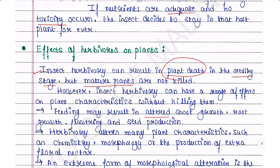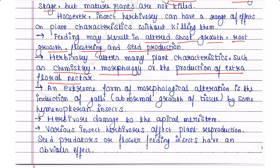Herbivory alters many plant characteristics such as chemistry, morphology, or production of extrafloral nectar. An extreme form of morphological alteration is the induction of galls — galls are abnormal growth of tissue induced by some hymenopteran insects. Herbivore damage to the apical meristem can also occur.